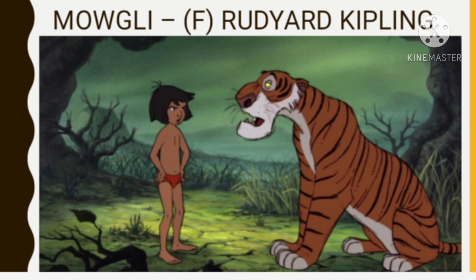Now, this is Mowgli — you know that song 'Jungle Jungle Baat Chali Hai,' right? The creator of Mowgli is Rudyard Kipling. The Jungle Book is a collection of stories by the English author Rudyard Kipling. Most of the characters are animals such as Shere Khan the tiger and Baloo the bear. The principal character is the boy, or man-cub, Mowgli, who is raised in the jungle by wolves.